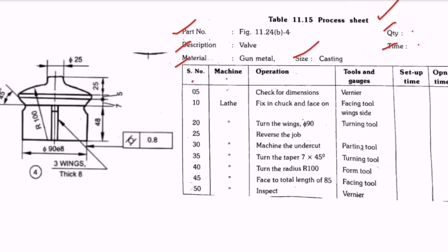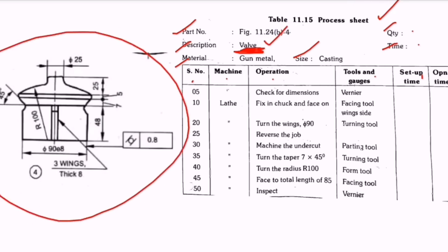The columns of the process sheet include: serial number, machines, operation required, tools and gauges, setup time, and operation time. We should indicate the name of the part for which we are preparing the process sheet. In this non-return wall, we are preparing the process sheet for the valve part, so we prepare it based on the shape of the valve.